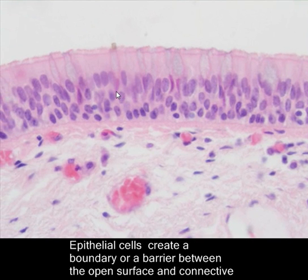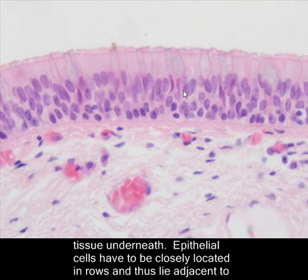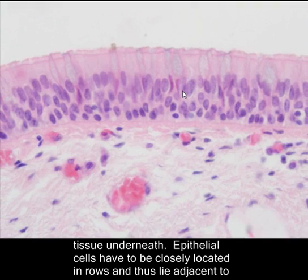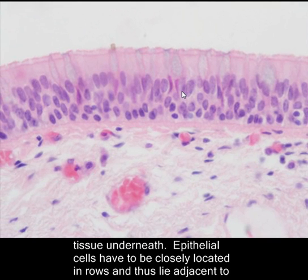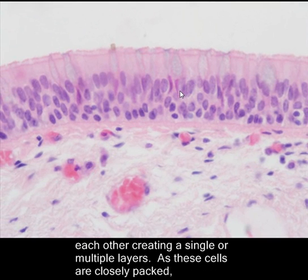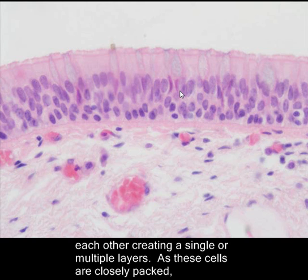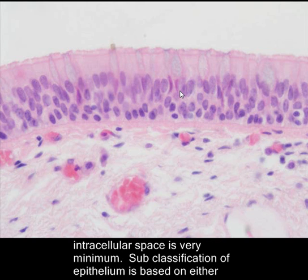Epithelial cells create a boundary or a barrier between the open surface and the connective tissue underneath. Epithelial cells have to be closely located in rows and thus lie adjacent to each other, creating a single or multiple layers. All these cells are closely packed, and the intracellular space is very minimal.